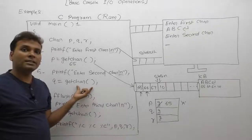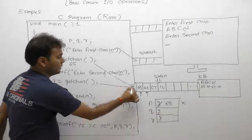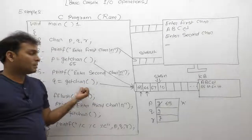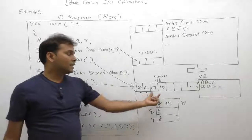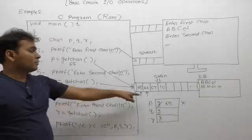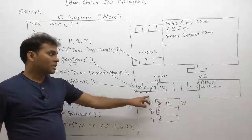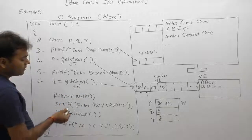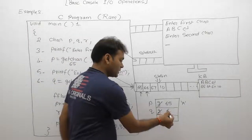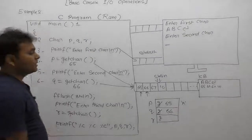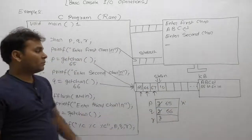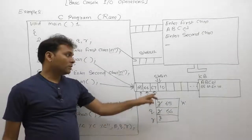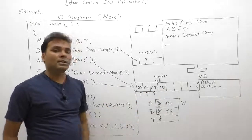Next, getchar is called again. It again interacts with the same stdin buffer. This time, the buffer is not empty — existing characters are still present. So getchar directly reads a single character from the current position. The buffer pointer is now pointing to the second byte, which is 66 — the ASCII value of 'b'. So 66 is assigned to variable q. After reading, the buffer pointer moves to the third byte. The buffer still contains 67 (c) and 10 (newline), so it is non-empty.